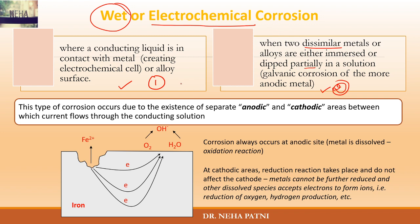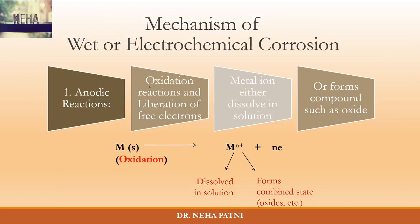Whether a single metal or two different metals are in presence of a liquid, in both cases there has to be development of an anodic site and a cathodic site, and the current flows through the conducting solution. At the anodic area, oxidation occurs — the metal loses electrons and forms a cation.